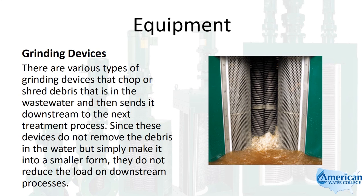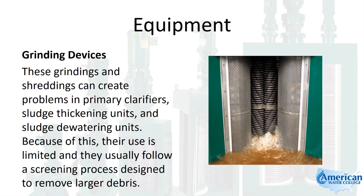There are various types of grinding devices that chop or shred debris in the wastewater and send it downstream to the next treatment process. Since these devices don't remove debris but simply reduce it to a smaller form, they don't reduce the load on downstream processes. These grindings and shreddings can create problems in primary clarifiers, sludge thickening units, and sludge dewatering units. Because of this, their use is limited and they usually follow a screening process designed to remove larger debris.